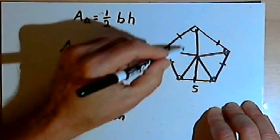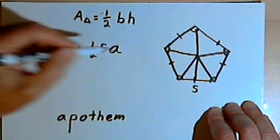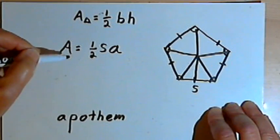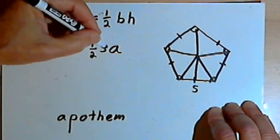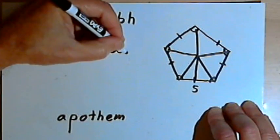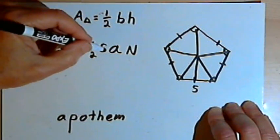But I'm going to have to multiply that by the number of triangles I have. So the area for the polygon is going to be one-half times the side times the apothem times the number of sides, or one-half S-A-N.